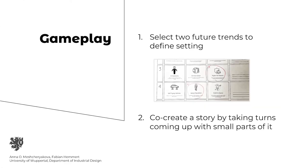To play the game, players first select two future trends out of a selection of 18 to set up a scenario in which their story will be set. For example, this could be a future shaped by an aging society and a political movement demanding equal rights for robots. Players then move on to the main phase of the game in which they co-create a story set in this scenario by taking turns coming up with small parts of it, or players collaborate to create one shared narrative.